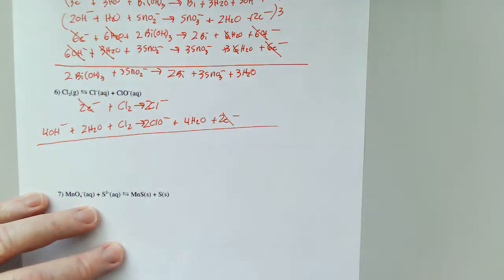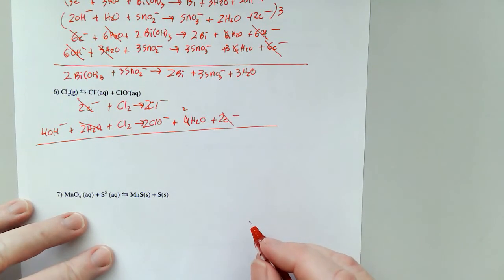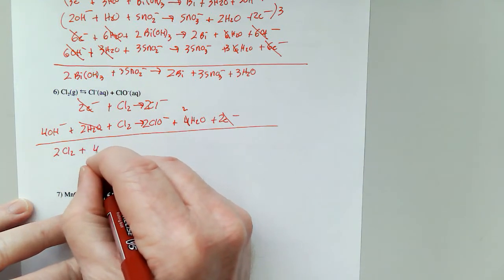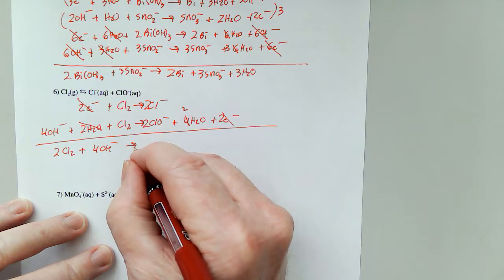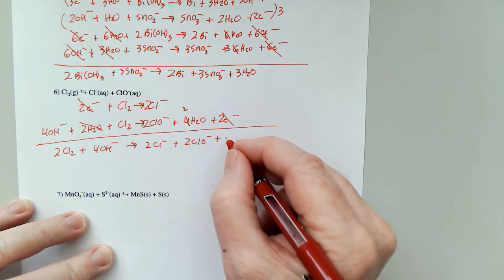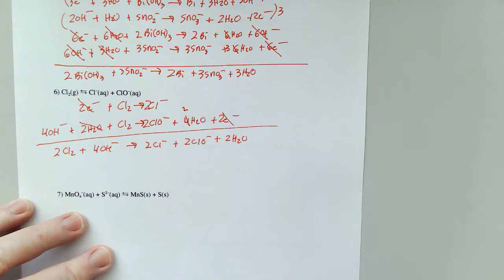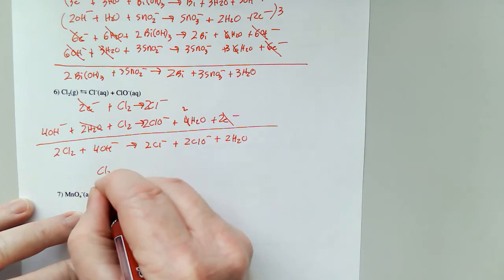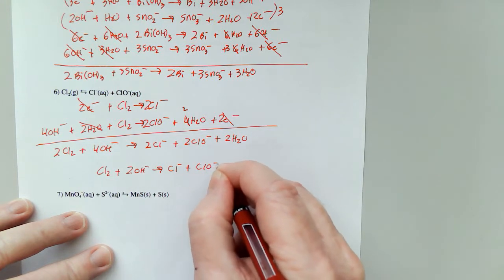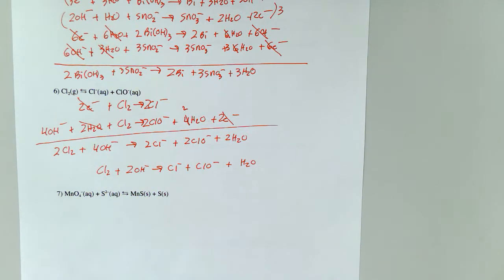The two electrons cancel, and these two waters make that into a two. So I've got two Cl₂ plus four OH⁻ gives me two Cl⁻ plus two ClO⁻ and two H₂O, which I can simplify by dividing everything by two, getting Cl₂ plus two OH⁻ gives me Cl⁻ plus ClO⁻ plus H₂O. There we go, number six.